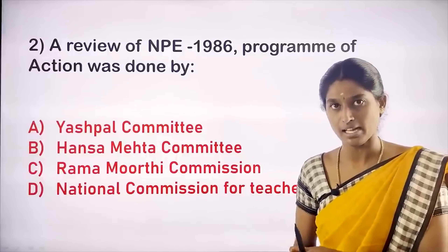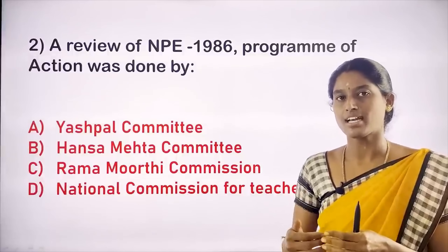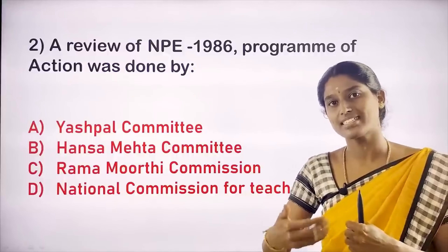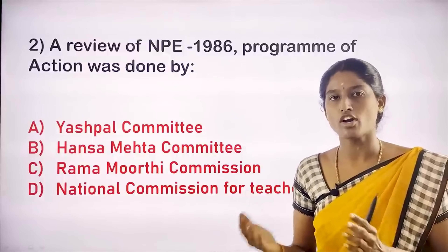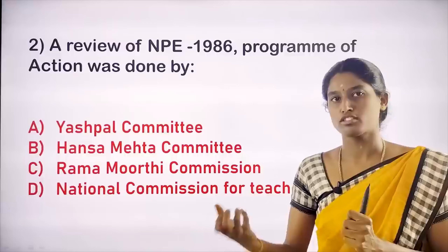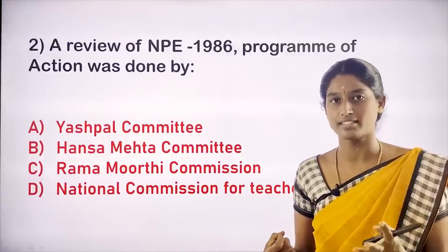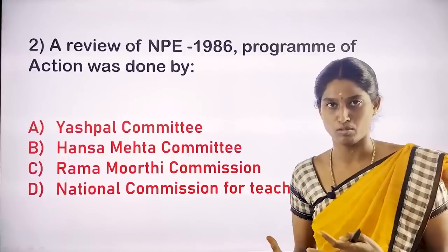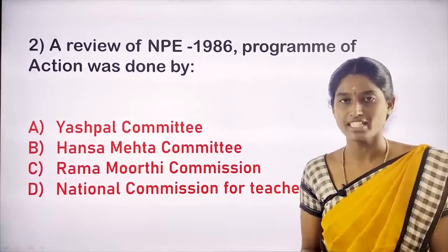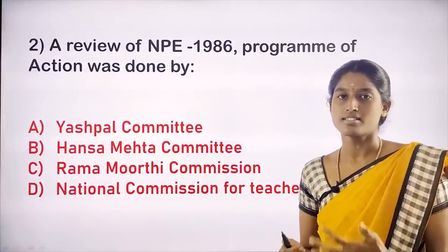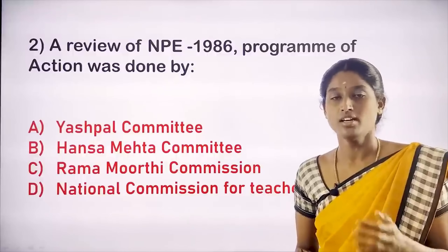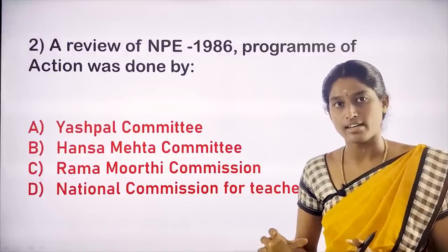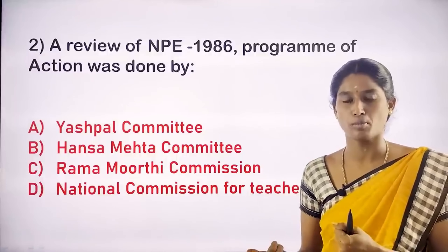There were two controversies regarding the National Policy of Education 1986 and the Ramamurthy Review Committee. There was a confusion state. So the Central Advisory Board of Education — formed in 1920 — and the government formed another committee: the Jannardhana Reddy Committee, to submit a report.